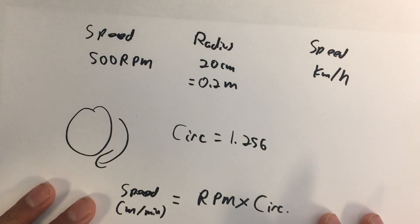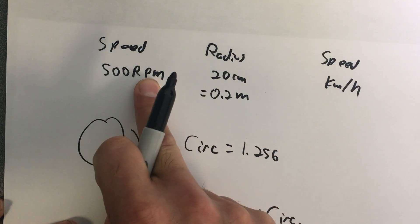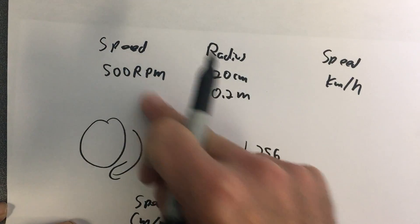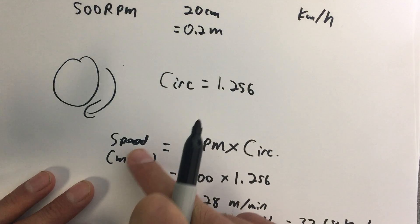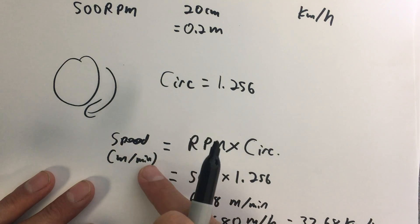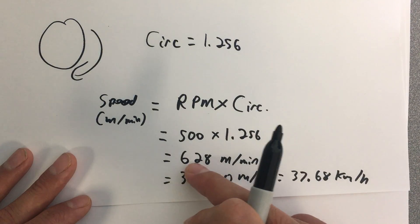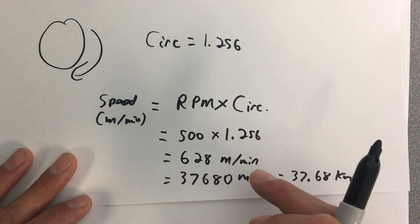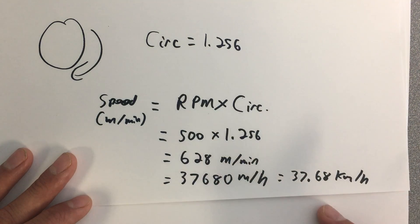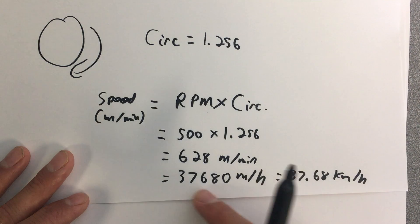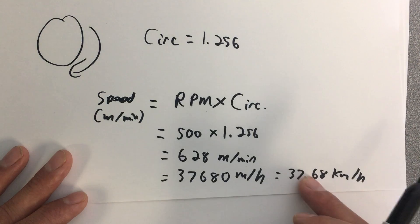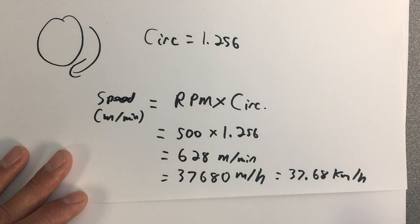To recap: take your speed in revolutions per minute, calculate your circumference, and multiply the two together — that gives your speed in meters per minute. Be careful about your units. Then multiply by 60 to get meters per hour, and divide by 1,000 to get kilometers per hour.